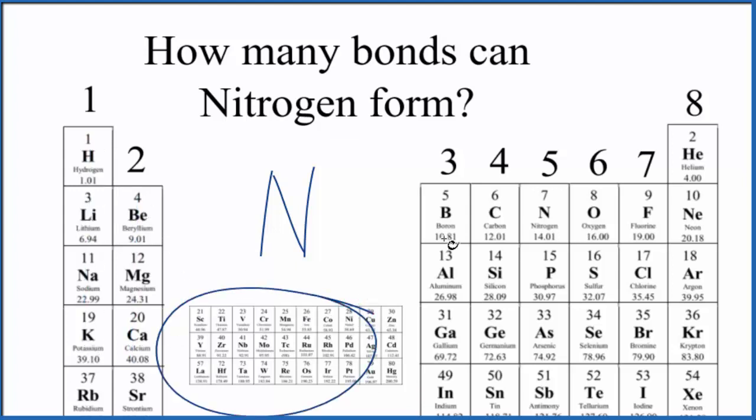We skip the transition metals, they're a little bit complicated. Group 13, sometimes called 3a, has three, 14 has four, and right here, nitrogen in group 15, sometimes called 5a, has five valence electrons. So let's draw them around the nitrogen atom.